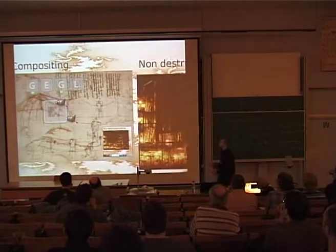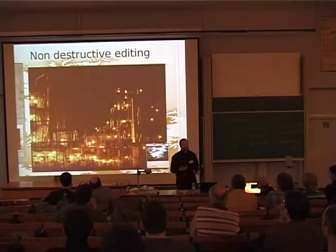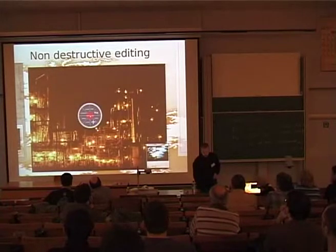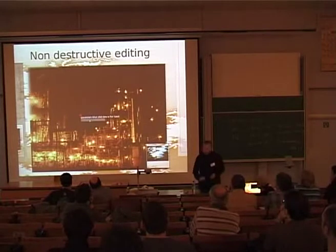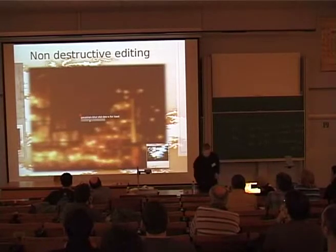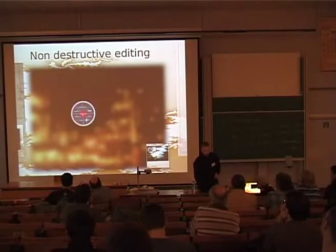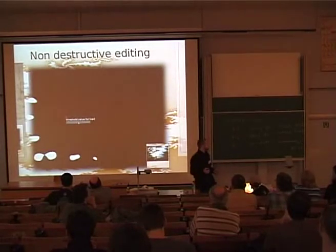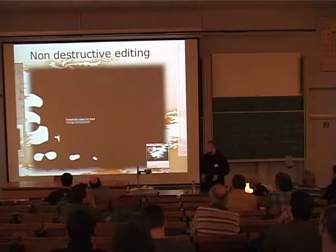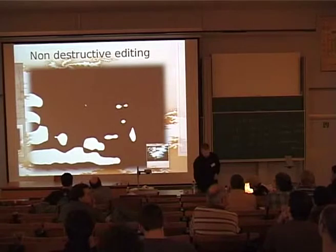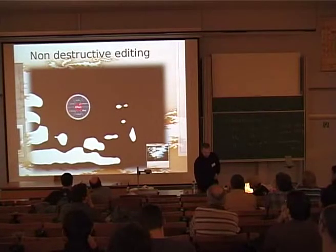Another main thing GEGL provides is non-destructive editing — a different way of working with images from how people traditionally work in GIMP. In GIMP you decide you want to do something and change the image directly. I'm going to create an effect: first blur it, then threshold the image. But since this is a dark image, I'll reduce the threshold to see more details. Since I've blurred so much I don't see details of that chemical factory, so I want to go back and adjust the blur — blur it less.